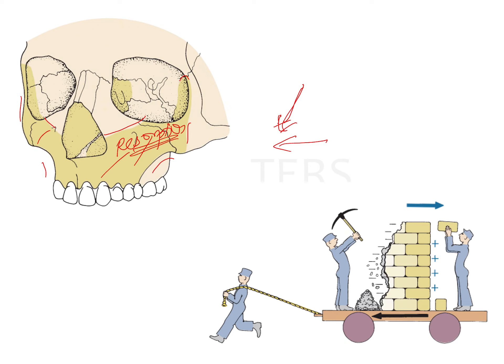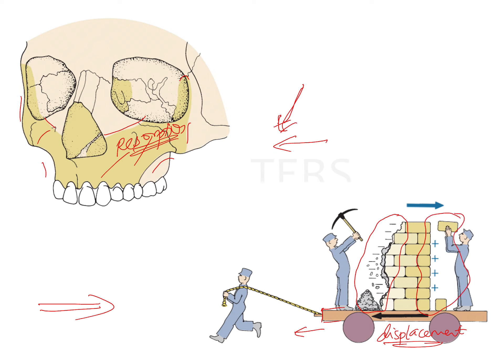Although the maxilla is moving in a downward and forward direction, the anterior surface of the maxilla is resorptive. This is similar to this cartoon: the maxilla is considered to be on a wheel, being translated downwards and forwards because of growth of itself and adjacent structures — it is being displaced. However, because of remodeling, the anterior surface is a surface of resorption and the posterior surface is a surface of deposition. This is how the growth of the maxilla takes place.